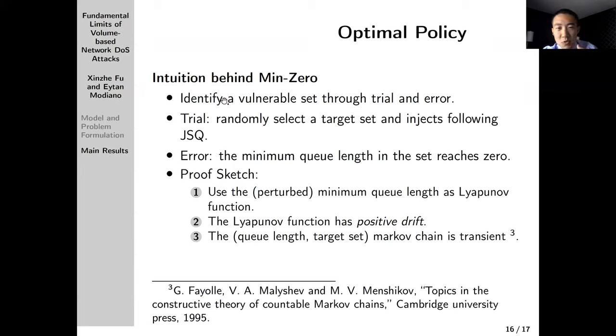We can formally prove that min-zero works by constructing a Lyapunov function, that is the perturbed version of the minimum queue length. We can show that the Lyapunov function has positive drift. This is the contrary, because we are trying to prove it's destabilizing the network. Using the result from this paper, we can show that the queue length target set Markov chain is transient. Based on this and other more reasoning, we can show that the min-zero policy is optimal.